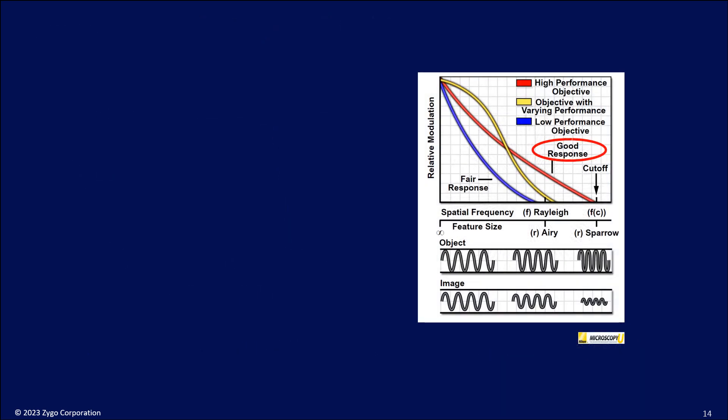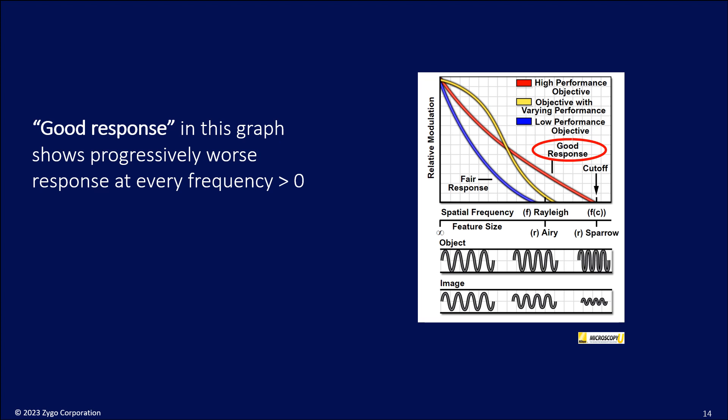So let's take a look at a typical MTF. Here we have some curves from Microscopy University, from Nikon, showing three different objectives: high performance and varying performance and low performance objectives. And let's take a look at the good response curve, which is the red one. It shows a progressively declining fringe contrast as a function of spatial frequency. In other words, the fringe contrast measurement is never right. Nonetheless, this is called a good response. It is the expected response and actually conforms to a diffraction-limited objective. So this tells us that errors in the MTF are deviations from the expectation. There's no ideal MTF.